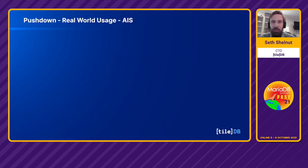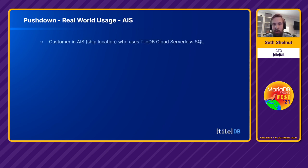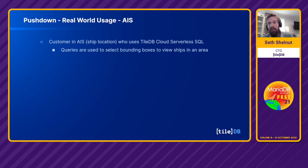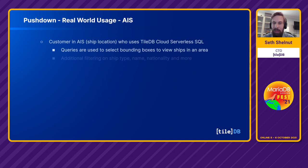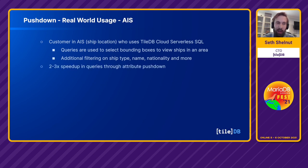In a real-world example, we have a customer in the AIS ship location market who uses MyTile through our TileDB Cloud serverless SQL offering. They issue bounding box queries to view ships in an area, giving lat-long queries and potentially time for a geographical region like the port of Shanghai, with additional filters on ship type, name, or nationality. When we added query condition pushdown — especially on attribute filtering — they saw a two to three times performance improvement in their queries.